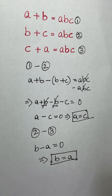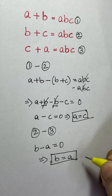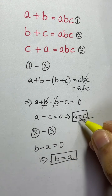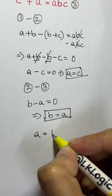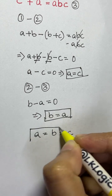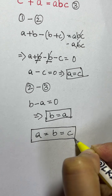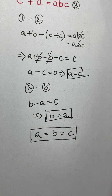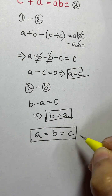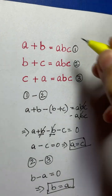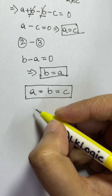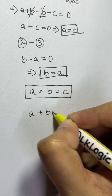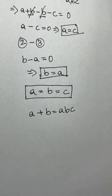From these results, we can say that a is equal to b and a is equal to c, so a equals b equals c. Now let's find what a, b, and c actually are. Taking equation one: a plus b equals abc.